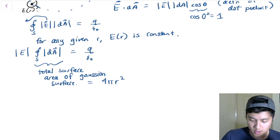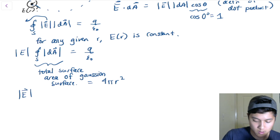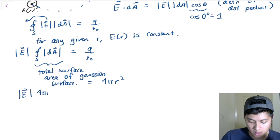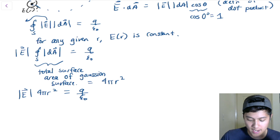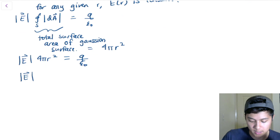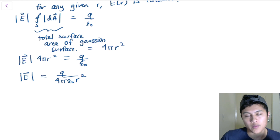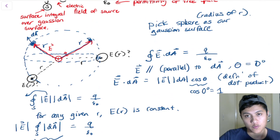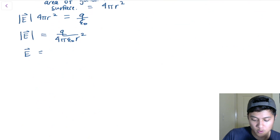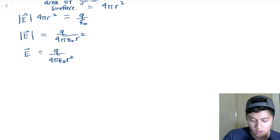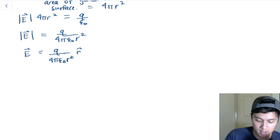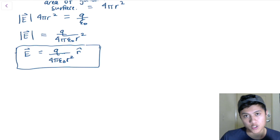Our Gaussian surface is a sphere of radius r, so its surface area is 4πr². The equation now reads E·4πr² = Q/epsilon naught. Solving for the magnitude of E by dividing both sides by 4πr² gives E = Q/(4π epsilon naught r²). Since the electric field points radially outward, the full vector form is E = Q/(4π epsilon naught r²) r-hat, and that is the electric field for a positive point charge.